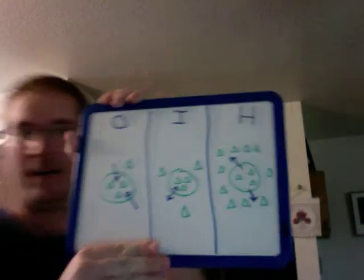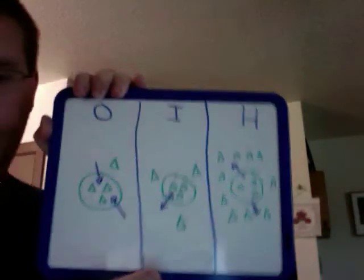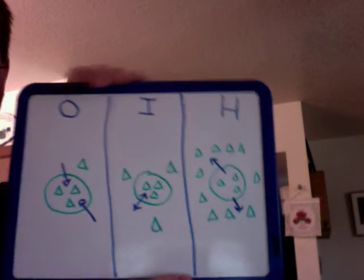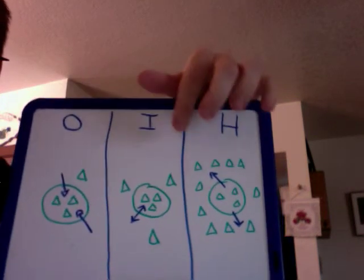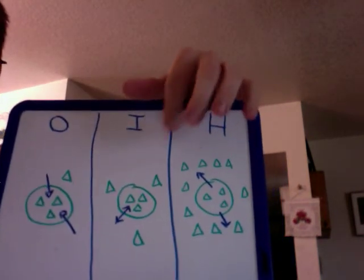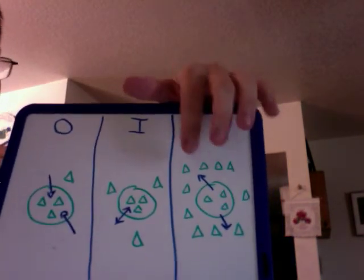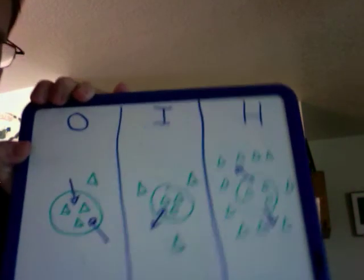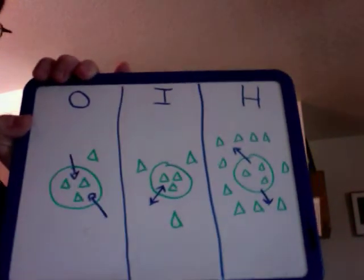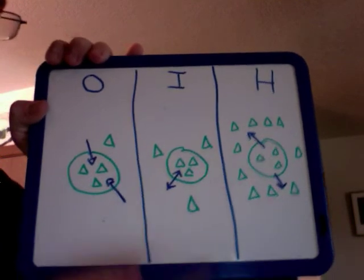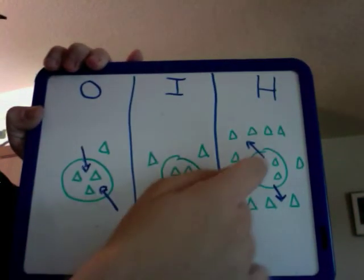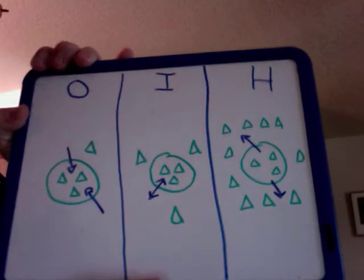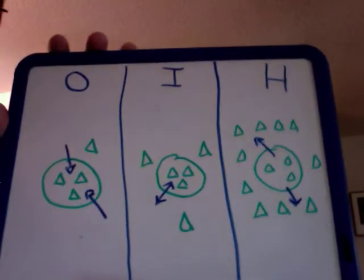In a hypertonic environment — where the triangles represent solute — there's more solute outside of the cell than inside. Where will the water go, based on osmosis? If it's more concentrated around the cell than inside, then water will leave the cell, causing it to become dehydrated.